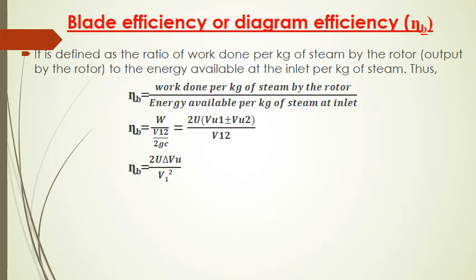Blade efficiency or diagram efficiency (symbol eta_b) is defined as the ratio of work done per kg of steam by the rotor to the energy available at the inlet per kg of steam, expressed as W divided by (v1² / 2gc). Work done is 2u(vu1 ± vu2) divided by v1². Therefore, blade efficiency or diagram efficiency can be expressed as 2u·Δvu divided by v1².